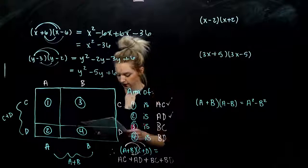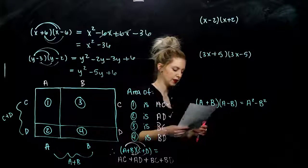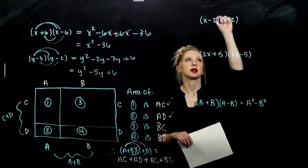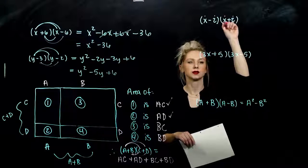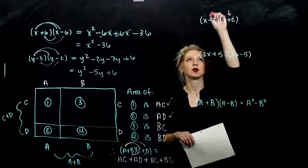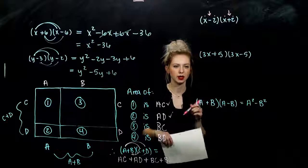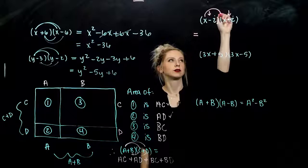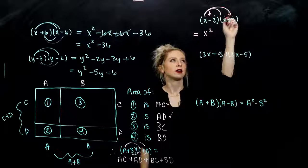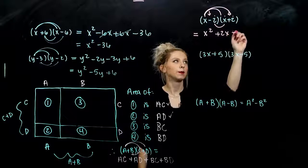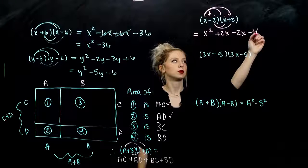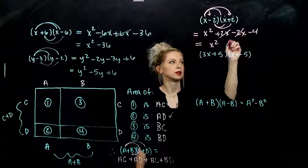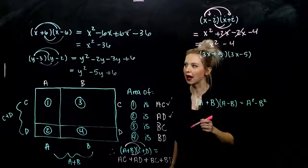So we want to consider the product of the sum and difference of the same two terms. I've got same term here, same term here. X and X, 2 and 2. Those guys match. But the signs are different. One of them is a negative and one of them is a positive. So what happens when we FOIL this out? Let's do it. First, I get X squared. Outer, plus 2X. Inner, minus 2X. Last, minus 4. So as we simplify, what's going to be gone? The middle two terms. And we're left with a binomial.